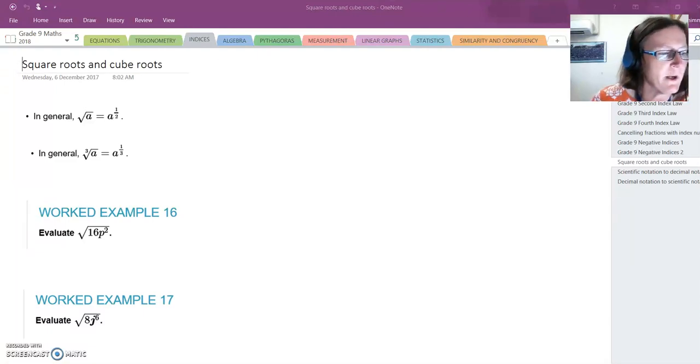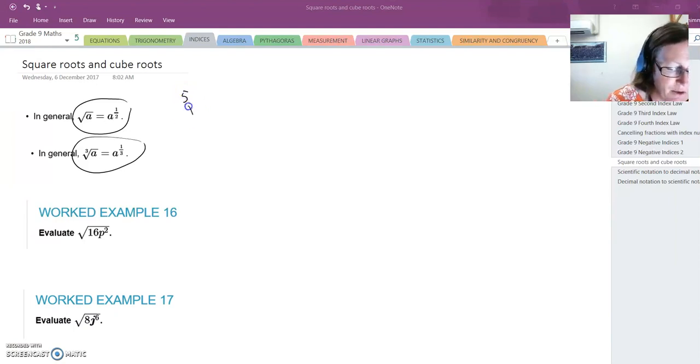If something has a square root, it's equivalent to having an index of one-half. If something has a cubed root, it's the equivalent of having an index of a third. If something has a fifth root, for example, it's the equivalent of having an index of one-fifth. A sixth root is the equivalent of having the index of one-sixth.